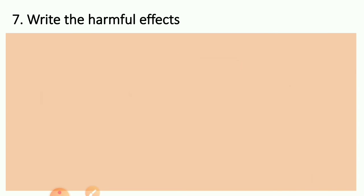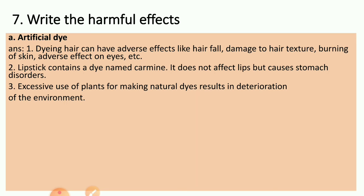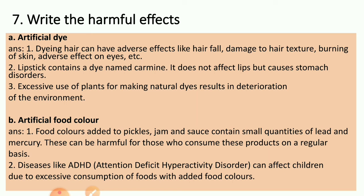Question 7: write the harmful effects. A: Artificial dye. Dyeing hair can have adverse effects like hair fall, damage to hair texture, burning of skin, and adverse effects on eyes. The lipstick contains a dye named carmine — it does not affect lips but causes stomach disorders. Excessive use of plants for making natural dye results in deterioration of the environment. Artificial food colors: food colors added to pickle, jam and sauce contain small quantities of lead and mercury, which can be harmful to those who consume these products regularly. Disease like ADHD can affect children due to excessive consumption of foods with added food colors.